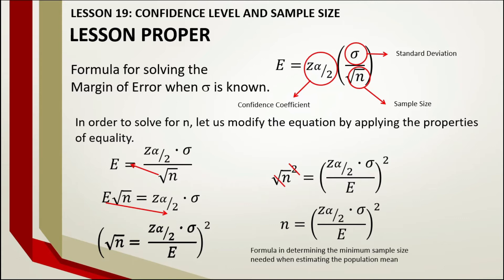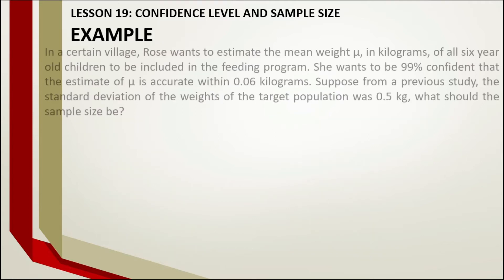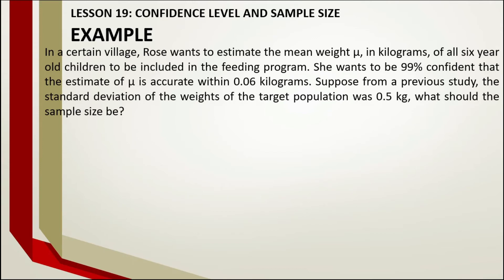This is the formula for determining the minimum sample size needed when estimating the population mean. Here is an example: In a certain village, Rose wants to estimate the mean weight in kilograms of all 6-year-old children to be included in a feeding program. She wants to be 99% confident that the estimate of the mean is accurate within 0.06 kilograms. From a previous study, the standard deviation of the weights was 0.5 kilograms. What should the sample size be?